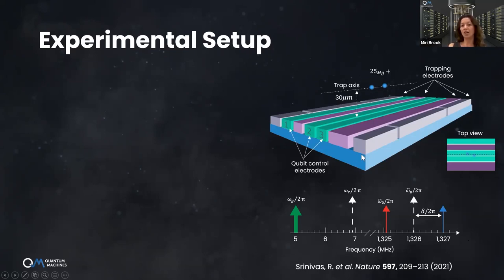In order to have individual ion addressing, the ion crystal is slightly rotated with respect to the trap axis, such that the two ions experience different AC Zeeman shifts. They are using a hyperfine transition which is magnetic field sensitive. Since we have a gradient over here, each qubit feels different effective magnetic field. Hence its AC Zeeman shift will be different.